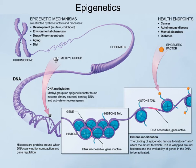Epigenetics is the study of variations in the way DNA is structured that can determine which genes are expressed and which genes are not. The word epigenetics breaks down as: epi means above, and genetics means the genome — the DNA. So epigenetics is another layer of regulation on top of the genes that we already have.